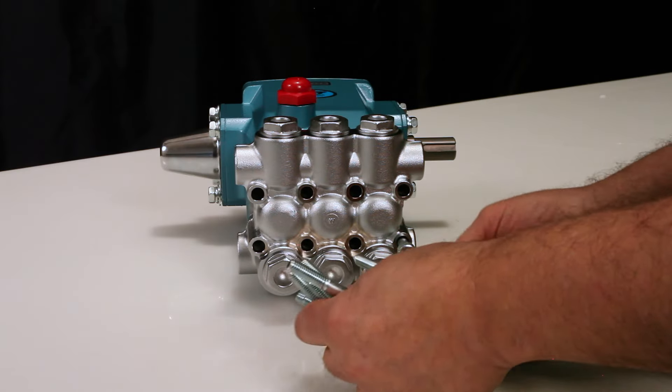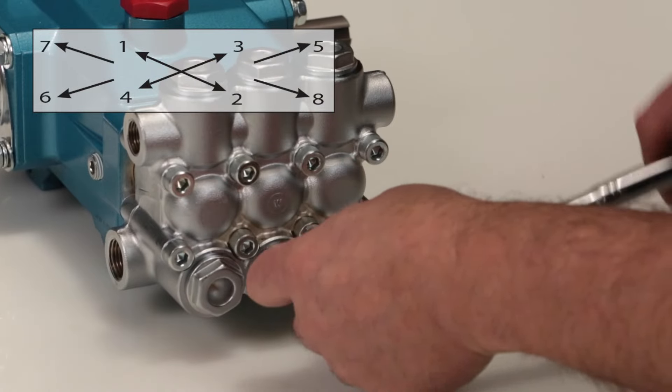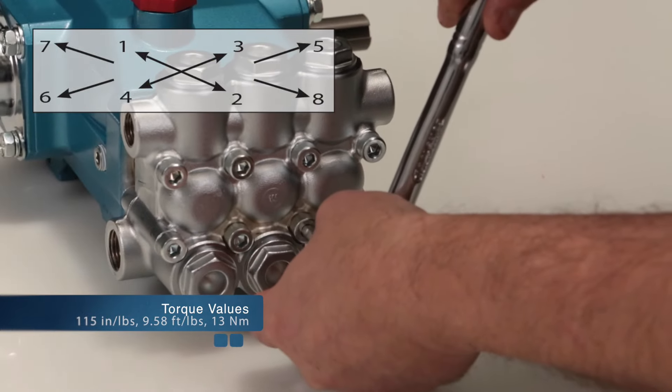Install the eight hex socket head screws. Tighten using appropriate cross pattern for even alignment using a 6mm Allen wrench. Torque to specification.